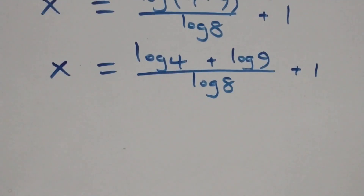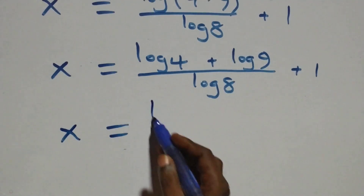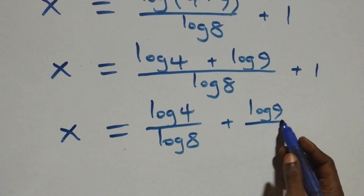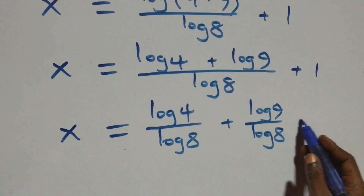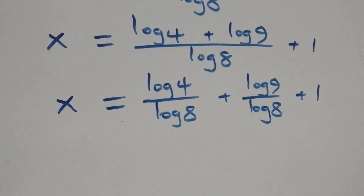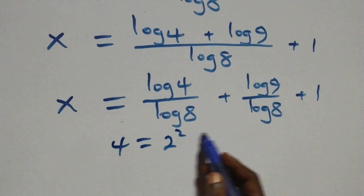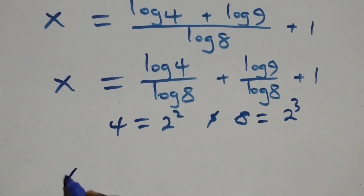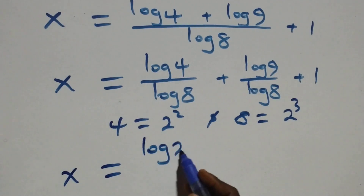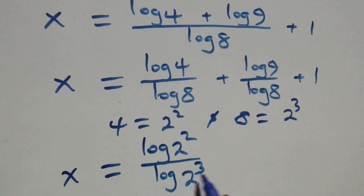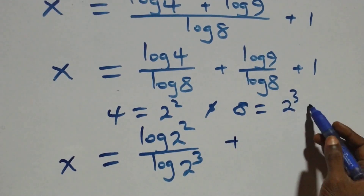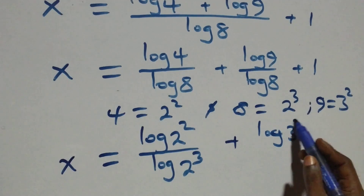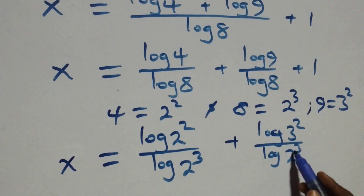The next step: we separate this into two fractions, giving x equals log 4 over log 8, plus log 9 over log 8, plus 1. From here, we can express 4 as 2 times 2, which is 2 squared, and also 8 as 2 times 2 times 2, which is 2 cubed. We can write 9 as 3 times 3, which is 3 squared. So x equals log(2²) over log(2³), plus log(3²) over log(2³), plus 1.